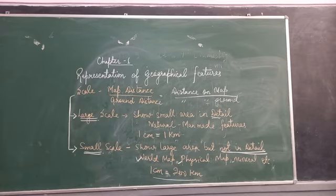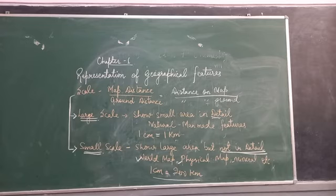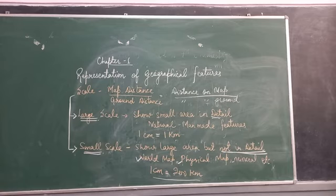The scale of the map is categorized into two categories: large scale map and small scale map. Large scale maps are maps which show a small area in detail. The name large scale is kept on the basis of their description, which is in detail — large means they show us very large detail of a particular area.